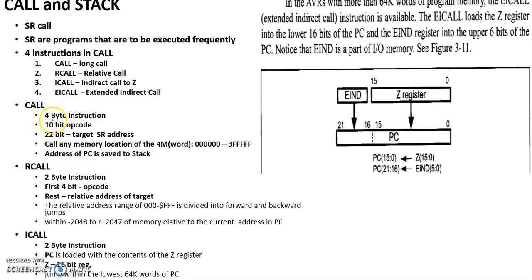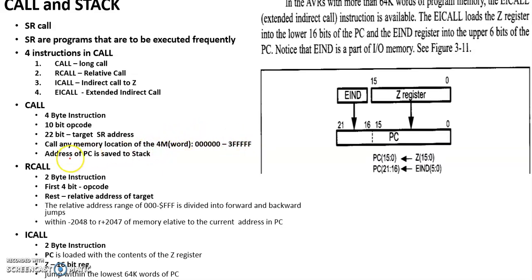The CALL instruction is a 4-byte instruction. The first bits represent the operation code and the remaining 22 bits represent the target address of the subroutine. This allows control transfer to any of the 4 million memory locations — addresses ranging from 0x000000 to 0x3FFFFF. The address of the PC is pushed to the stack on call.